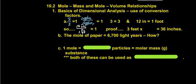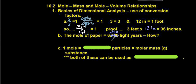We use this for proof. For example, 3 feet multiplied by 12 inches equals 36 inches. We mentioned in the last unit that 1 mole of paper is equal to 6,700 light years — that's actually not quite true. It's actually about 6,490. And so here's how it works. We're going to do dimensional analysis to work our way through this.